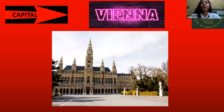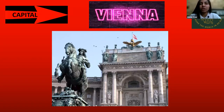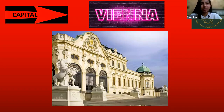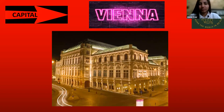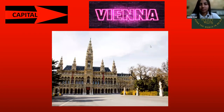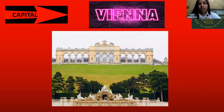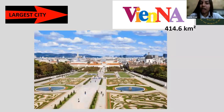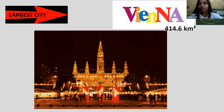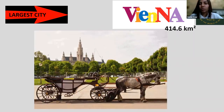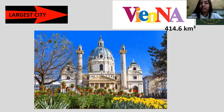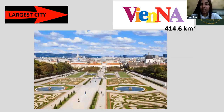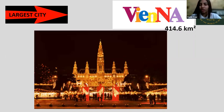Moving on to the capital — the capital of Austria is Vienna. Here you can see a few beautiful images of Vienna. Vienna is also the capital as well as the largest city of Austria. It covers a land area of around 414.6 square kilometers.